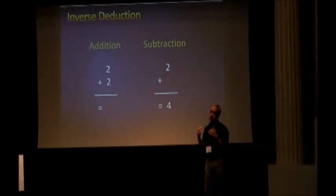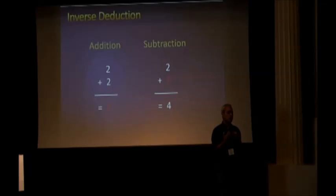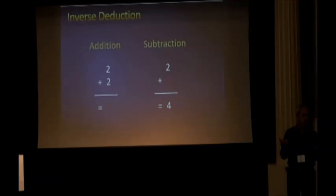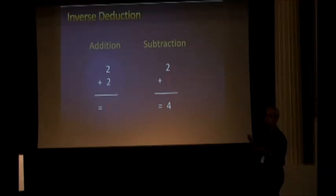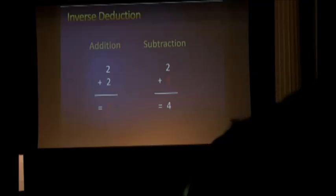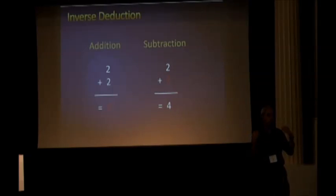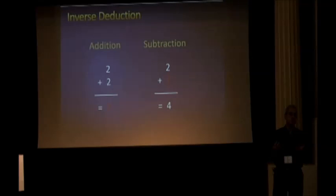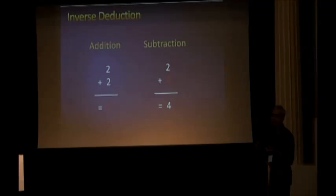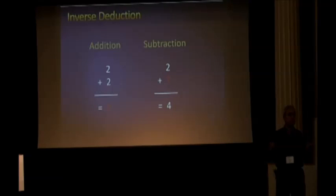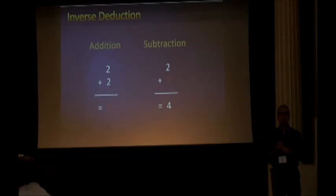The idea is that learning is the problem of induction — going from specific facts to general rules. Induction is the opposite of deduction. Deduction is when you go from general knowledge to specific inferences. The idea here is to do induction — machine learning — by viewing it as the inverse operation of deduction, in the same way that subtraction is the inverse of addition, or integration is the inverse of differentiation.